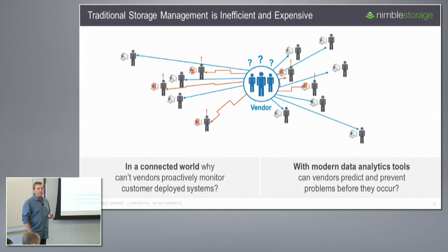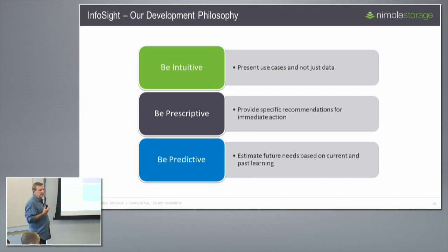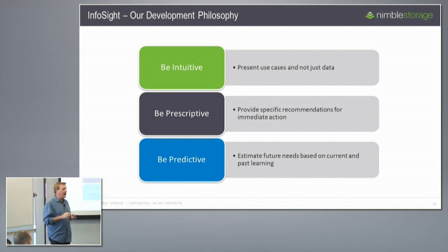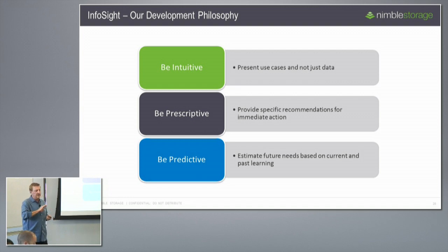From the development philosophy behind Infocyte, there are three tenants we try to stick to. First, we want it to be intuitive — we really present use cases that customers follow, not just raw data. Second, we want it to be very prescriptive, meaning we're not just going to show them what went wrong but why, and what needs to be done to either fix it proactively or after the fact. Third, that leads to the predictive side — catching things in advance before they cause an issue.